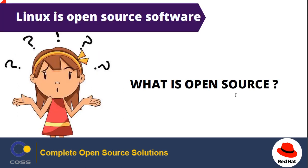Why should we use Linux? The first very beautiful feature is open source. Open source code is the set of human-readable instructions used to make a program. It may be interpreted as a script or compiled into a binary executable. Upon creating source code, it gets copyrighted, and the copyright holders control the terms under which the software can be copied, adopted, and distributed. Users can use the software under a software license. Open source software is code designed to be publicly accessible — anyone can see, modify, and distribute the code as they see fit.